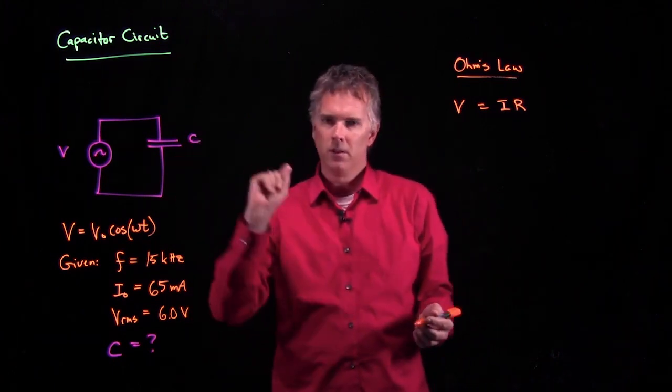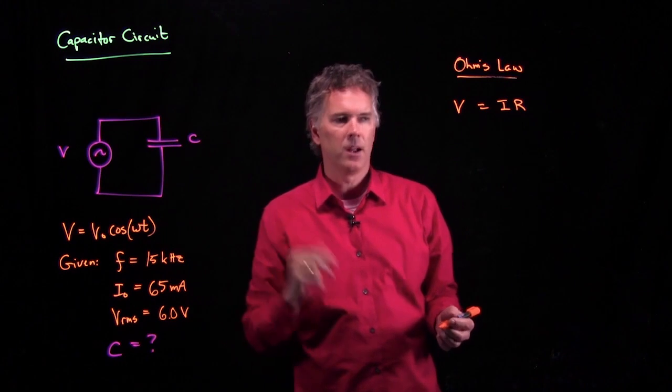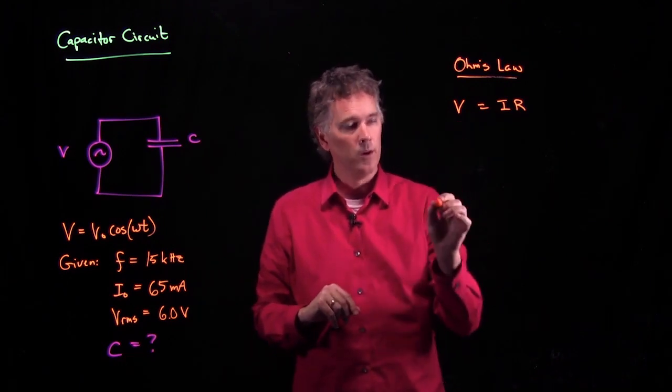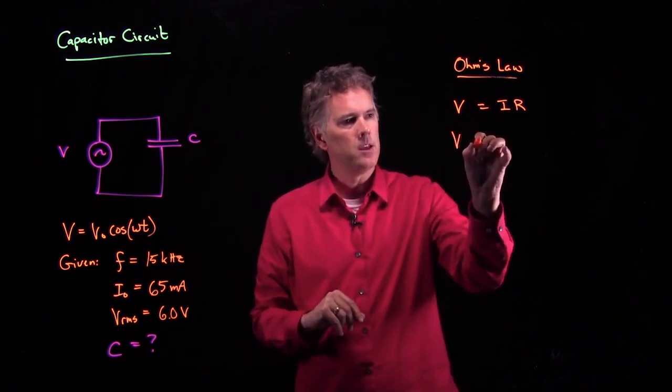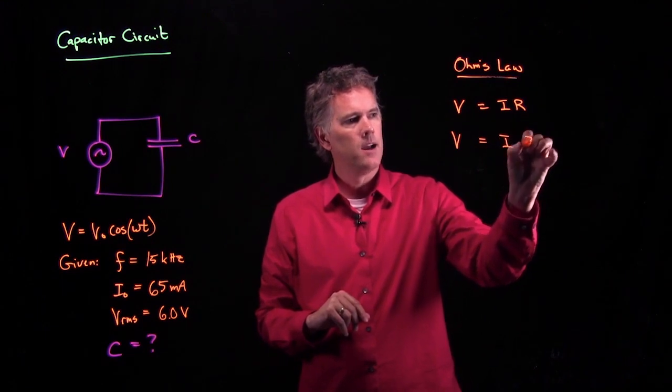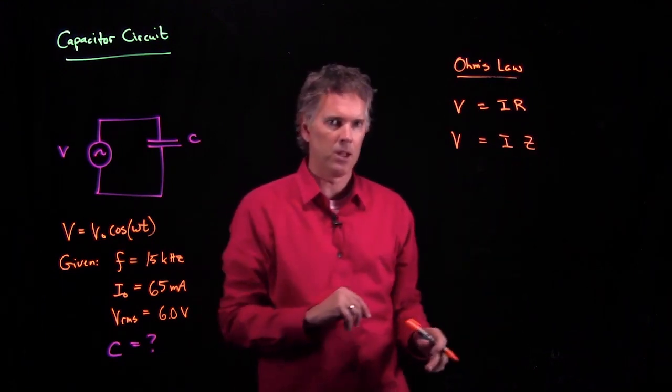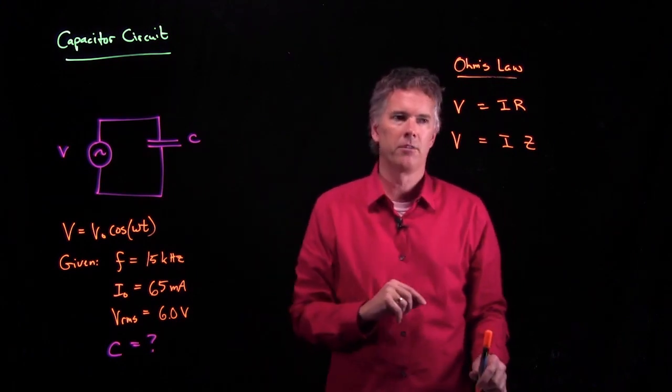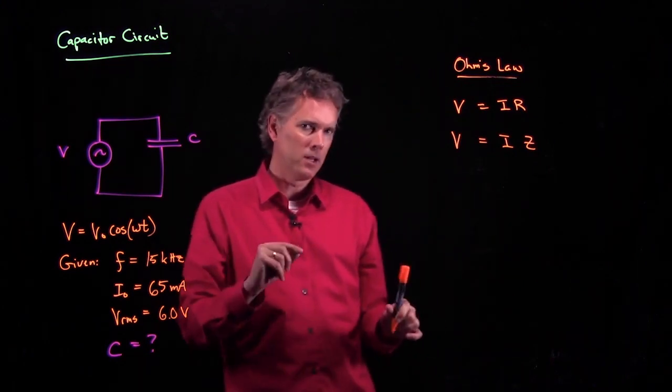But remember, when we deal with these capacitors, we have complex impedance. And so the equivalent is V equals I times Z, where this Z is the complex impedance of the device.